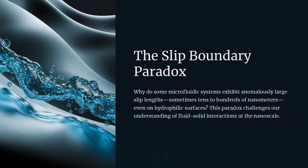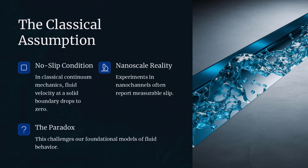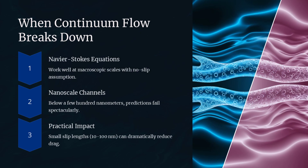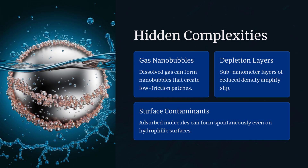The slip boundary paradox arises when fluids in micro- or nano-channels exhibit flow velocities at the wall that contradict the classical no-slip boundary condition. In many experiments, measured slip lengths — extrapolated distances beyond the wall where fluid velocity would vanish — reach micrometer scales even on hydrophilic surfaces. Such anomalously large slip implies that continuum mechanics may break down or that additional interfacial physics dominates at small scales. Pressure-driven water flow in carbon nanotubes shows effective slip lengths of tens of nanometers despite strong water-carbon affinity — like ice skaters gliding effortlessly over a surface that should, by friction laws, bring them to an immediate halt.